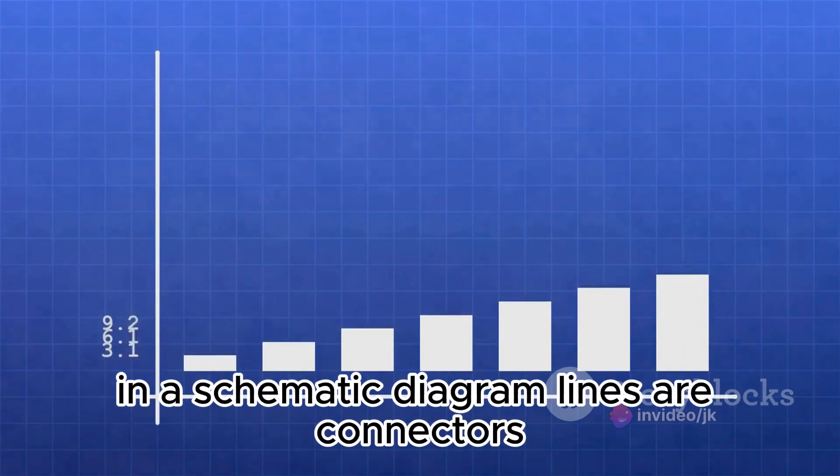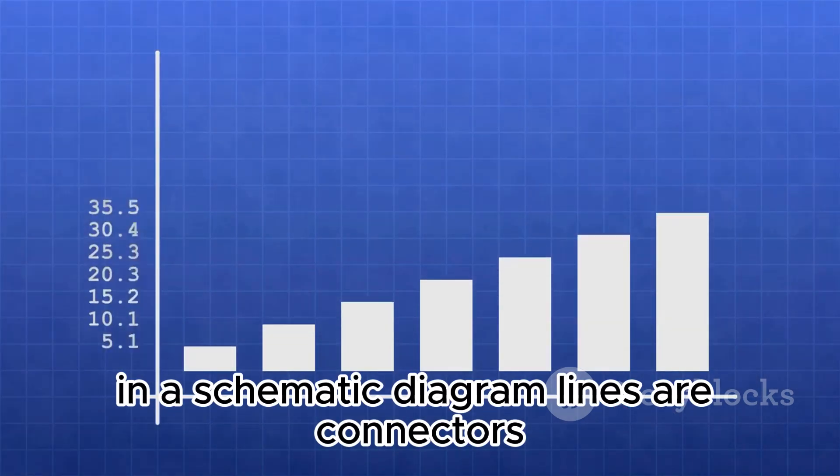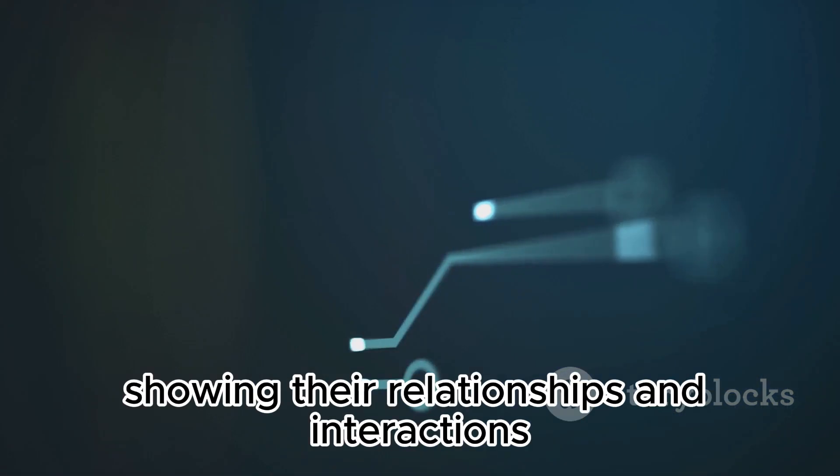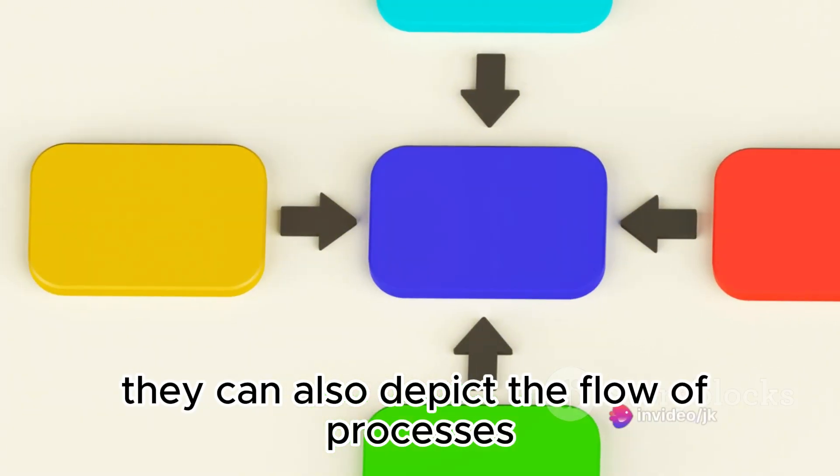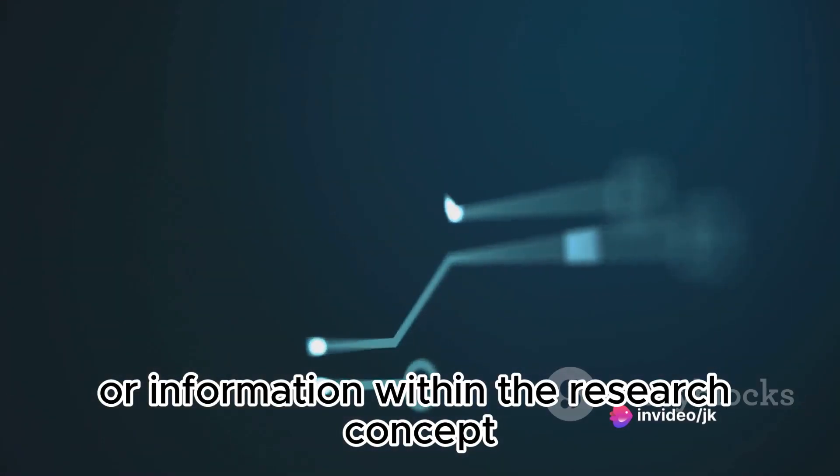Next, we have lines. In a schematic diagram, lines are connectors. They link the symbols, showing their relationships and interactions. They can also depict the flow of processes or information within the research concept.